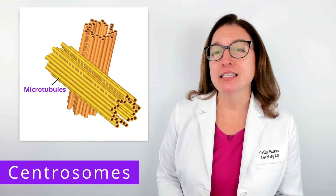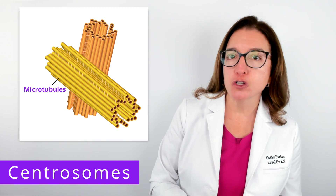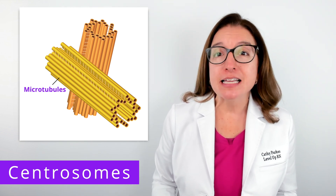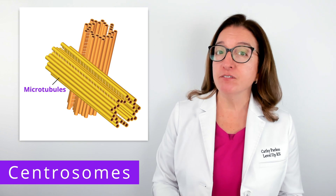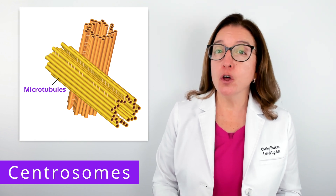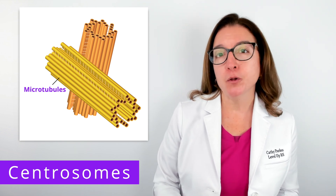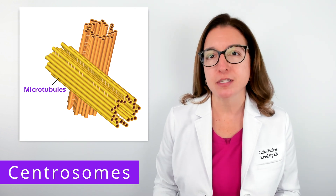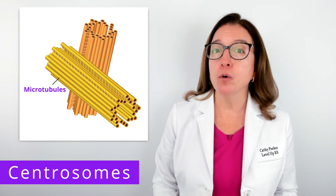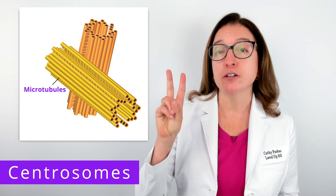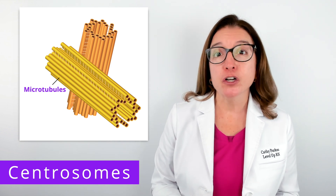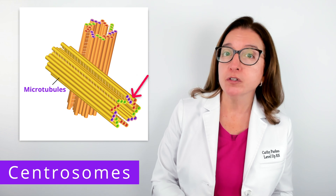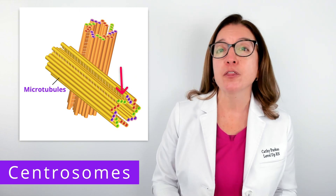Within animal cells, you will also find centrosomes, which are basically microtubule organizing centers that are important in cell division. Centrosomes form the mitotic spindle, which separates chromosomes during mitosis and meiosis. Each centrosome consists of two centrioles, and each centriole consists of nine triplets of microtubules held together by proteins.